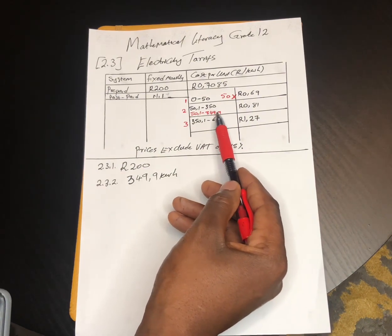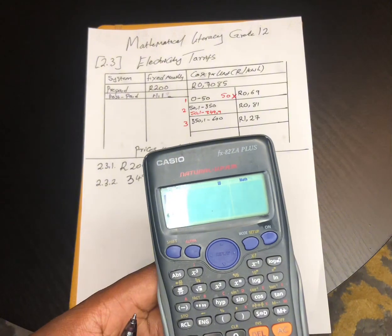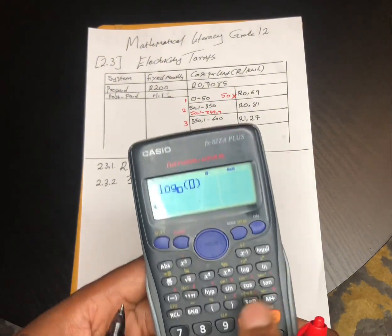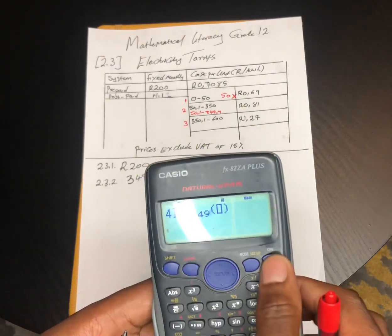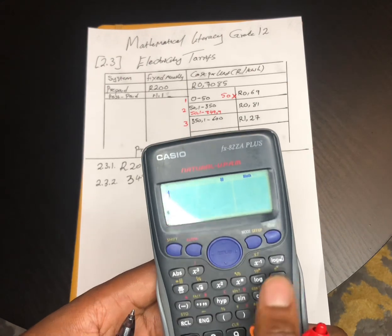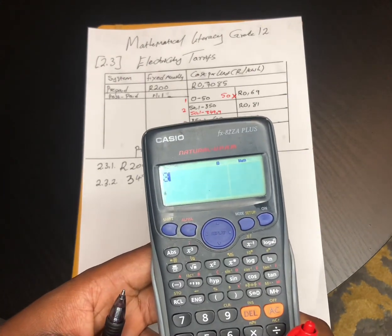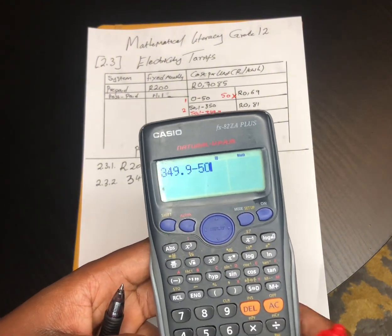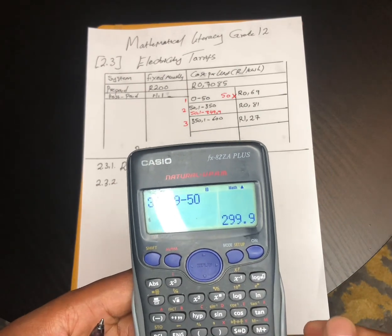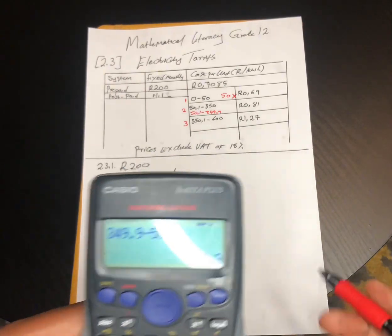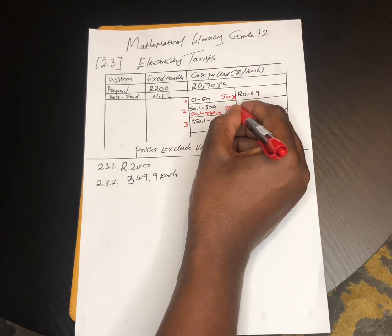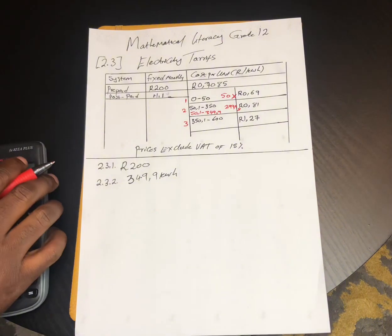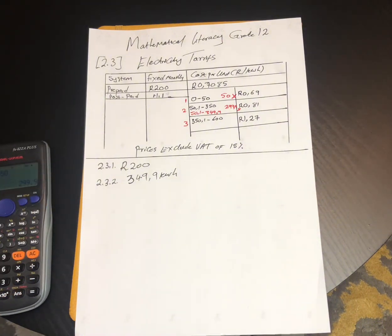So the difference for block two is 349.9 minus 50, which equals 299.9. We then multiply 299.9 by the price of interval two.